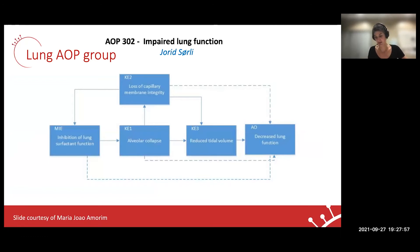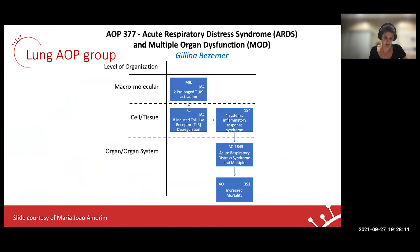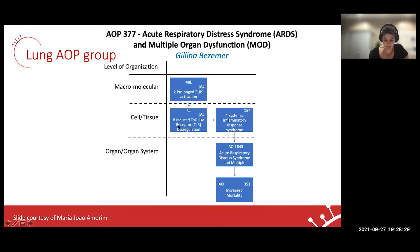Two other lung AOPs have been developed in the CHAO project: one leading to decreased lung function through alveolar collapse, and the other via loss of capillary membrane integrity. A final AOP leading to acute respiratory distress syndrome describes how dysregulation of toll-like receptors is involved and the way they control the systemic inflammatory response, with a new key event developed detailing the TLR dysregulation.